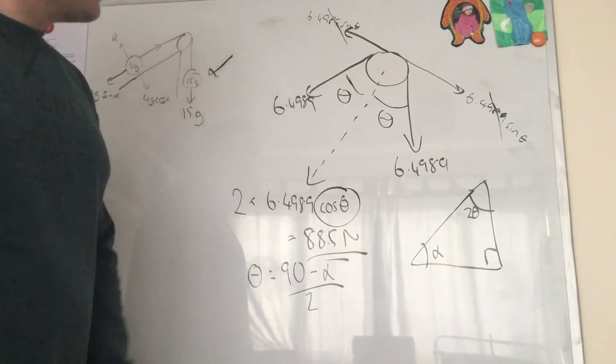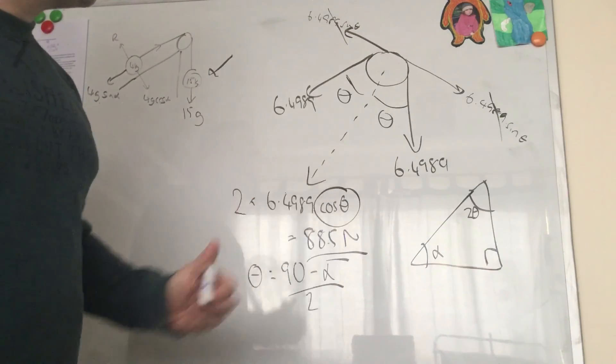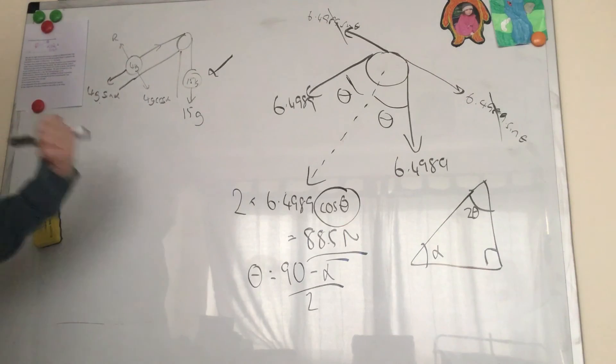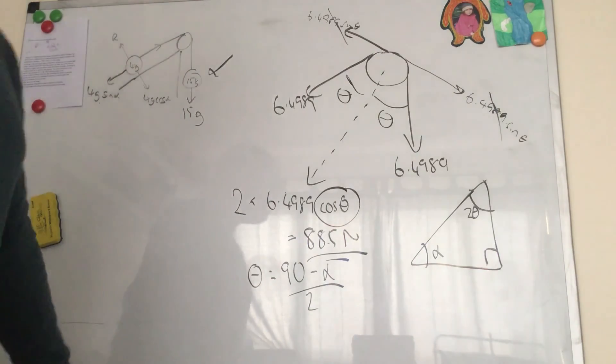And when we plug back into there, we should get 88.5 newtons overall magnitude of the force acting on the pulley. There are a couple of tricky things in there in C and D, that's why I chose this question. I didn't expect me to mess up so badly on A, so sorry for that. I hope that makes sense. If not, let me know and I'll try and do a more clear video or explain it in class. Okay, bye.